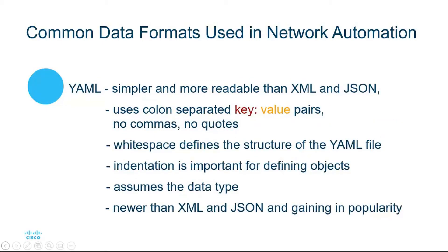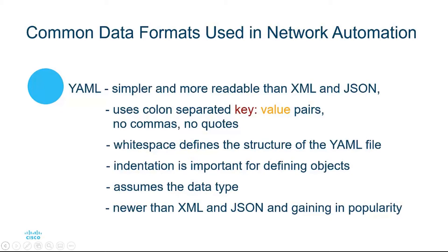YAML is simpler and more readable than both XML and JSON. It uses colon-separated key-value pairs where no quotes or commas are necessary. White space defines the structure of a YAML file, and indentation is important for defining the objects. YAML will try to assume the data type automatically. YAML is newer than XML and JSON and is gaining in popularity, especially with network programmability.